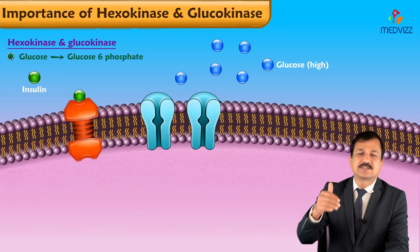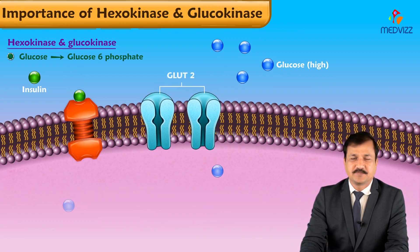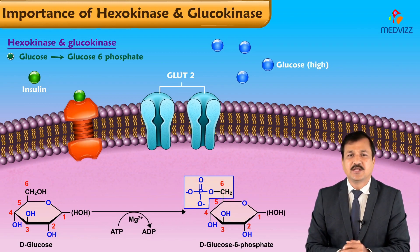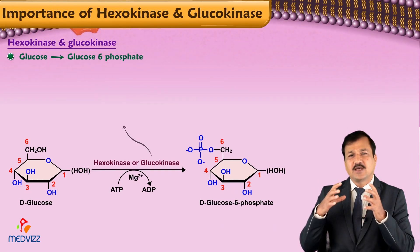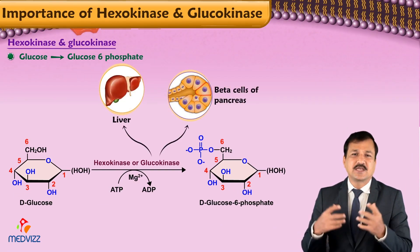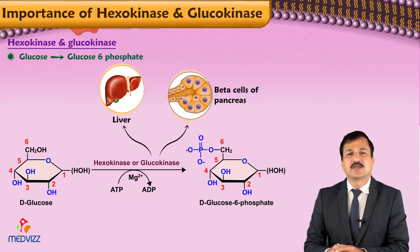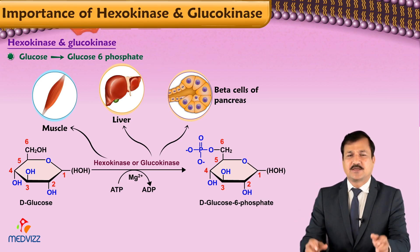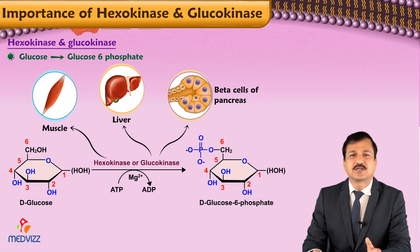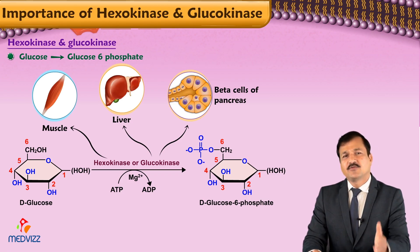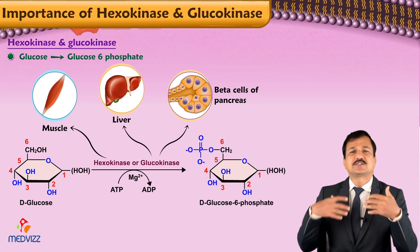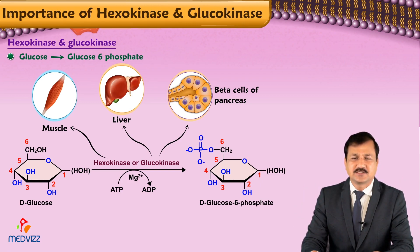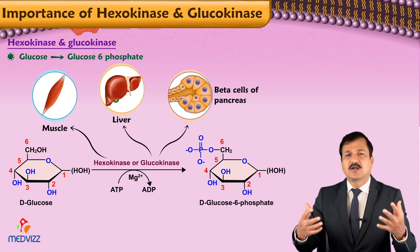In the cell, when glucose gets in, it is done through GLUT transporters. When glucose transporters allow glucose to get into the cell, it is phosphorylated at its sixth carbon — done by glucokinase in the hepatic tissues and beta cells of pancreas, while the same reaction is done by hexokinase in extra-hepatic tissues. So why do you need two enzymes to do the same thing — phosphorylation of glucose at its sixth carbon? Whenever glucose is converted into glucose-6-phosphate, it is trapping that glucose inside the cell, meaning glucose is committed to that cell, because glucose-6-phosphate simply cannot come out of the cell.